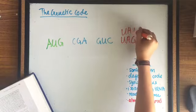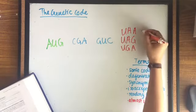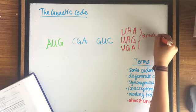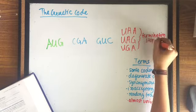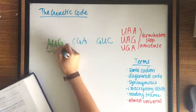The initiation codon is usually AUG, and the termination codons are also called stop codons or nonsense codons which are UAA, UAG, and UGA.